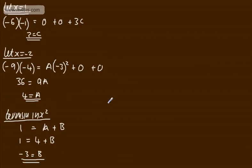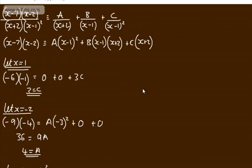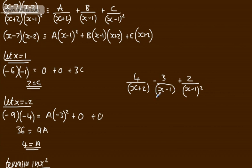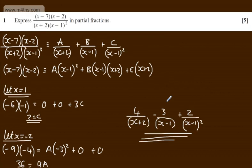So rewriting the partial fractions, we have 4 over x plus 2, minus 3 over x minus 1, plus 2 over x minus 1 all squared. That expresses the original expression in partial fractions for 5 marks. There are a few different approaches, but we should end up with these values.